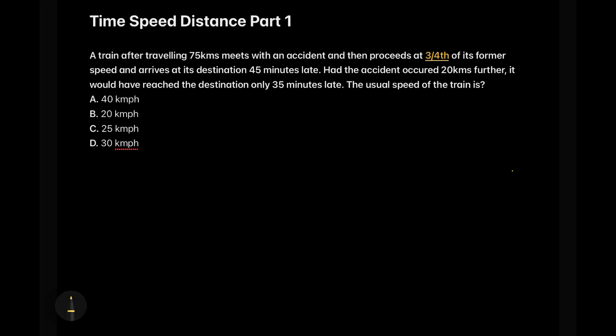So over here we can see that the train is traveling with 75 kilometers and meeting with an accident, and then the speed of the train changes and it becomes three-fourth of its former speed. Now the speed earlier was one by one and now the speed is three by four. So there is a reduction of one by four in the speed.